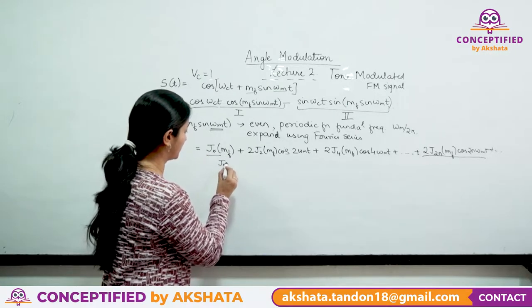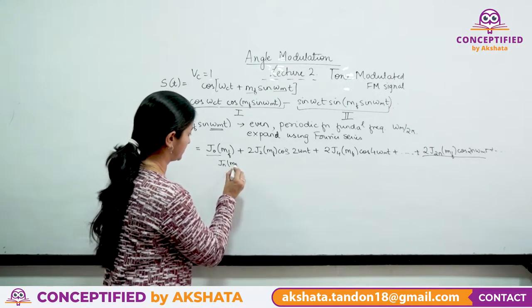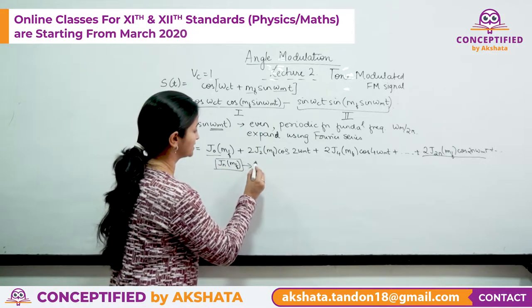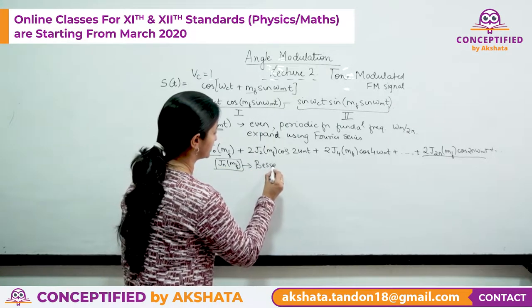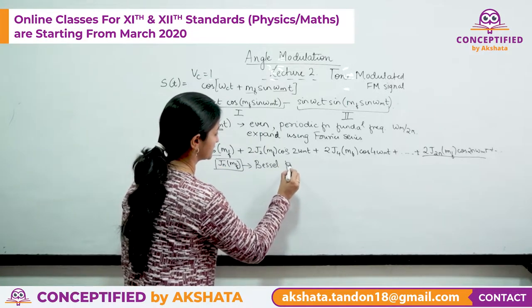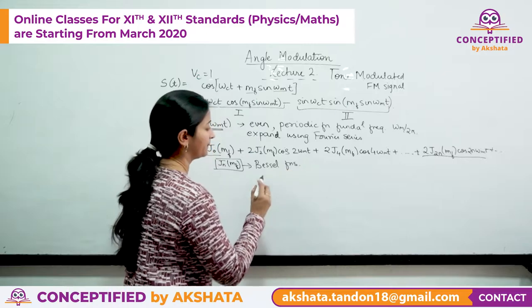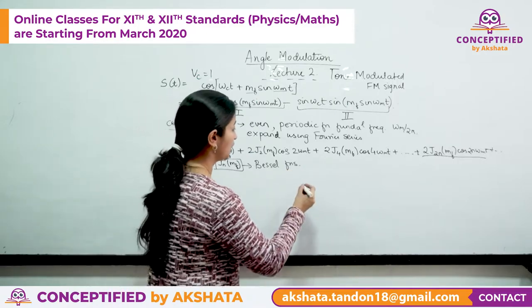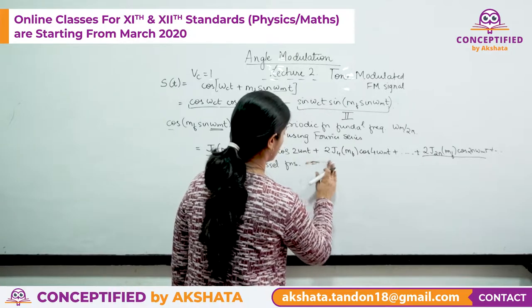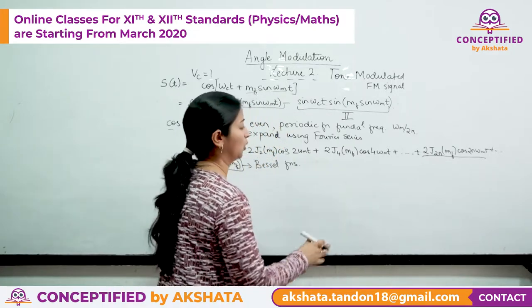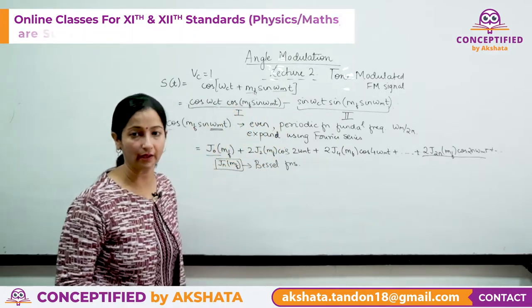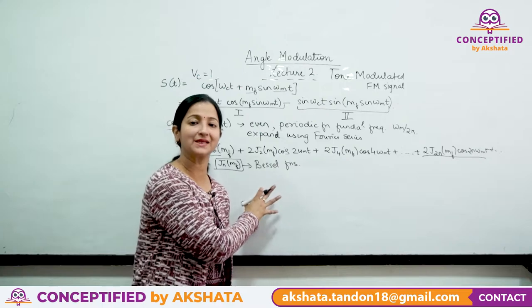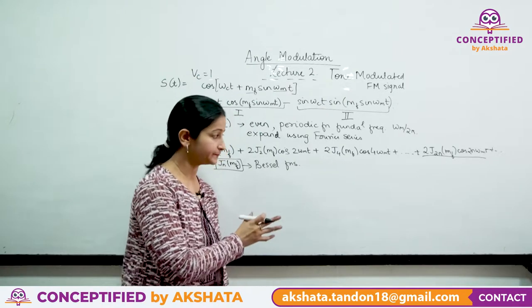The coefficients Jₙ(mf) are known as the Bessel function coefficients of the first kind of order n.